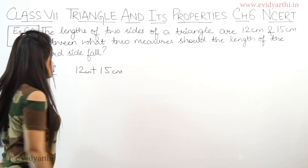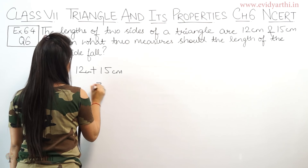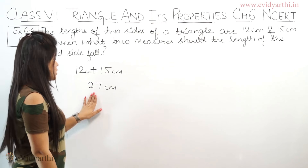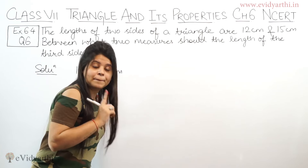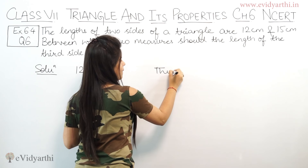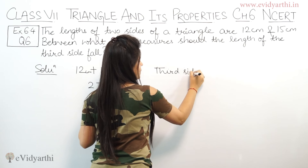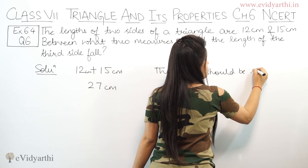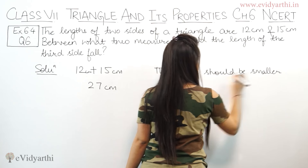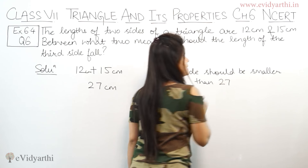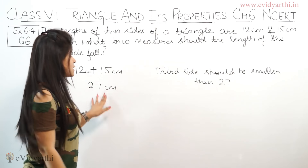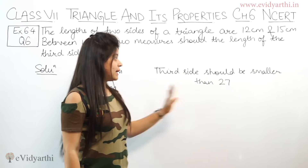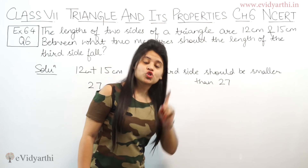If we add them, 5 plus 2 is 7, so that is 27. This means the sum of the two sides is bigger than the third side. Whatever the third side will be, it should be smaller than 27.